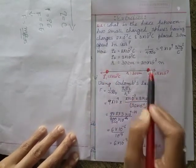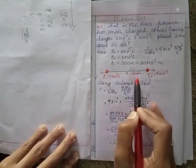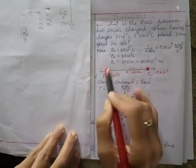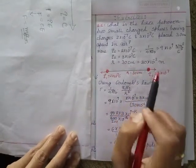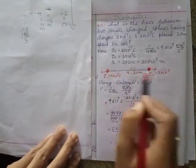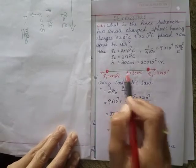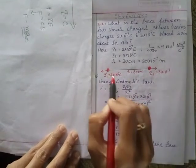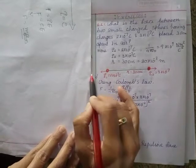q₁ is here, q₂ is here, distance between them is 30 centimeter. Now we have to find the force. We are going to use Coulomb's force. Since both are positive, the force will be in opposite direction, repulsion. So on q₁ the force is this side, it will repel this side, and this will be for this side also.